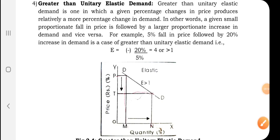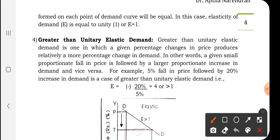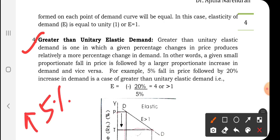The next degree is greater than unitary elastic demand, where E is greater than 1. It is one in which a given percentage change in price produces a relatively larger percentage change in demand. For example, a 5 percent fall in price may be followed by a 20 percent increase in demand — the percentage change in quantity demanded is comparatively more than the percentage change in price.